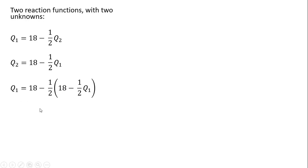So minus 1 half times 18 is minus 9, minus 1 half times minus 1 half Q subscript 1 is where this plus 1 fourth Q subscript 1 is coming from. Moving up here now, 18 minus 9 leaves us with 9.